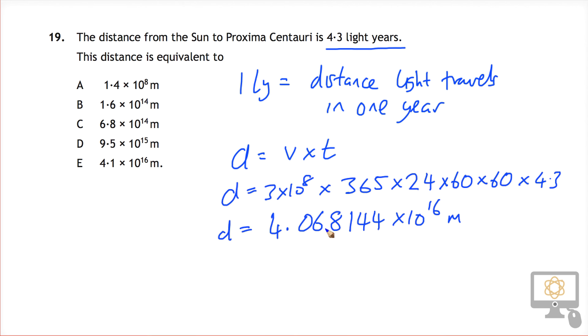Obviously you would want to round this to the correct number of sig figs, and we've got 2 sig figs in our question. So in 2 sig figs here that's 4.1 times 10 to the 16 meters. And so therefore that means our answer is E.